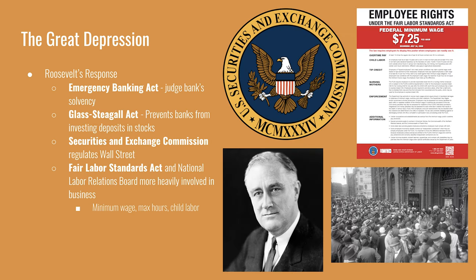Franklin Roosevelt was elected in 1932 but not inaugurated until March 1933. His administration responded more directly to the need for a stronger financial regulatory system. The Emergency Banking Act closed all banks and allowed the federal government to judge whether each was solvent enough to reopen — if the government approved a bank, people would have confidence and bank runs would be avoided. The Glass-Steagall Act prevented banks from investing in the stock market or other risky investments. The Securities and Exchange Commission was created to regulate Wall Street and is still active today.